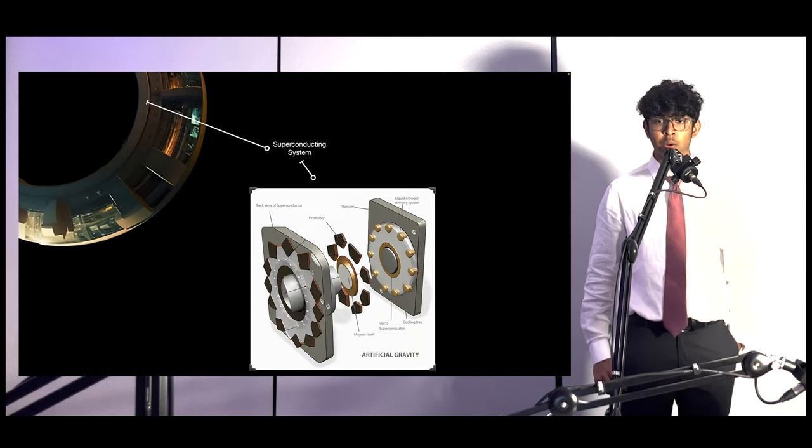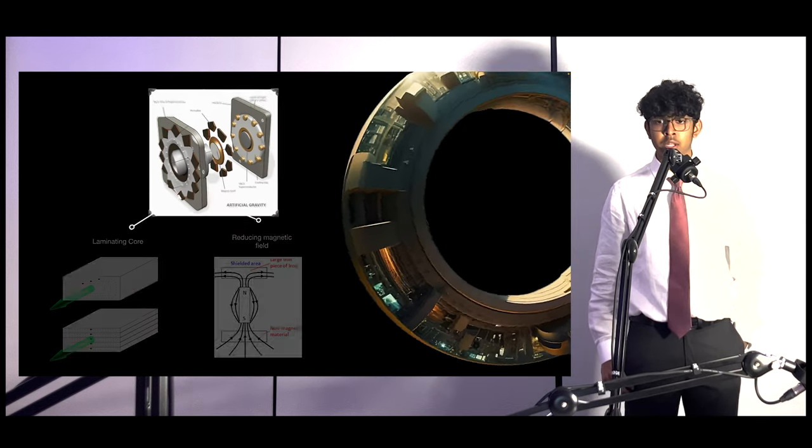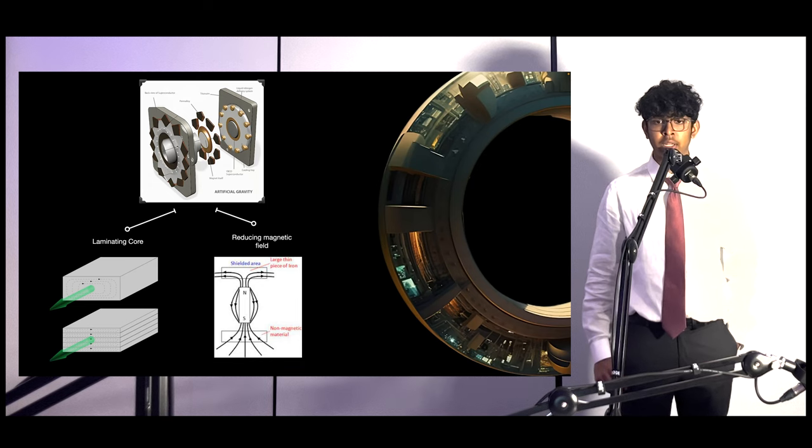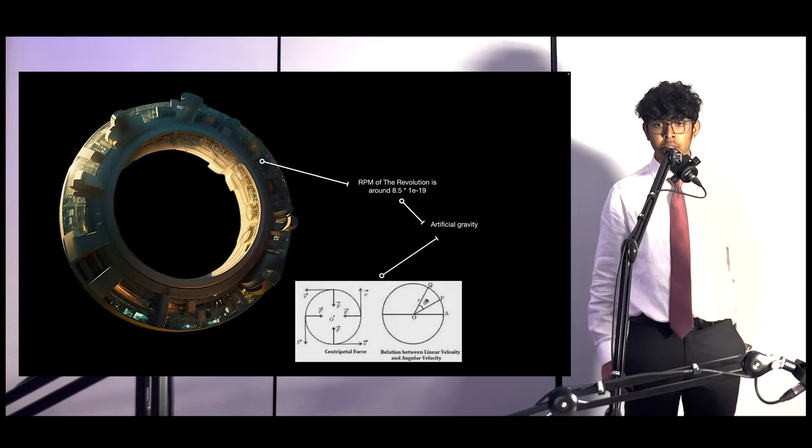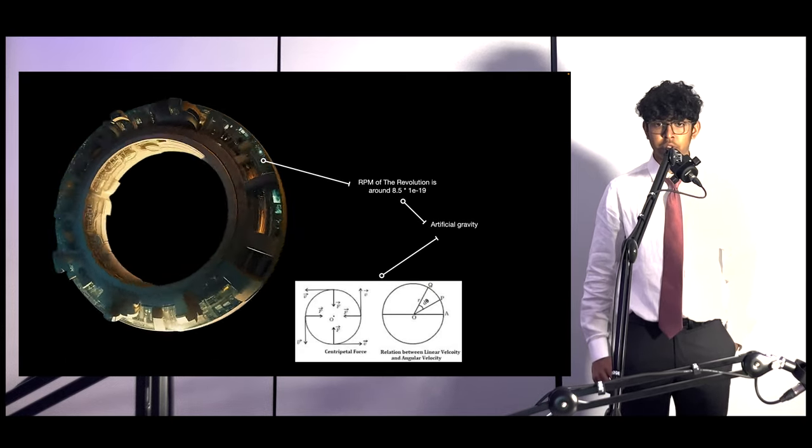High-temperature superconductors like YBCO can generate artificial gravity in space habitats. Picture a toroidal space colony using massive superconductor systems to rotate magnets and simulate gravity. High-permeability metals like moon metals protect living quarters from magnetic interferences. Laminating superconductor cores reduces eddy currents. The RPM designed to replicate Earth's gravity is low but sufficient.